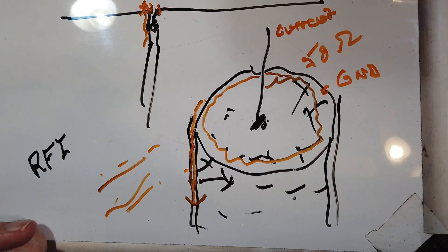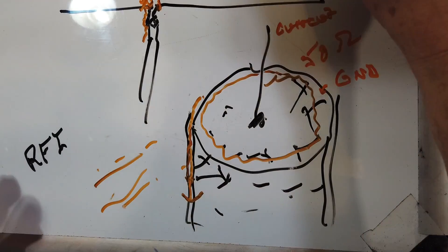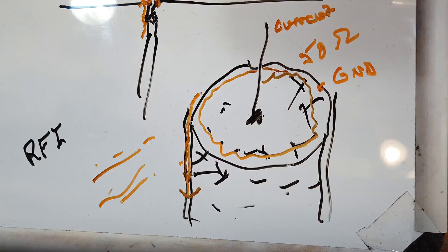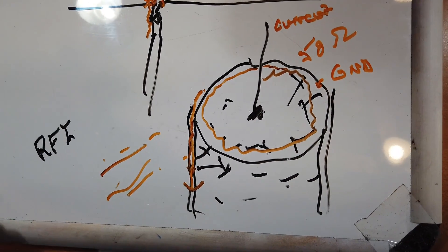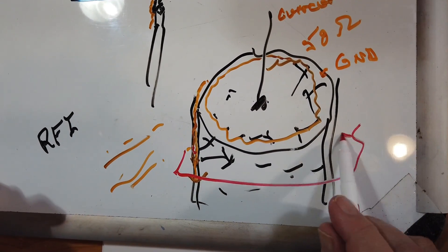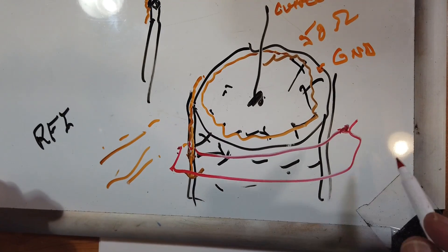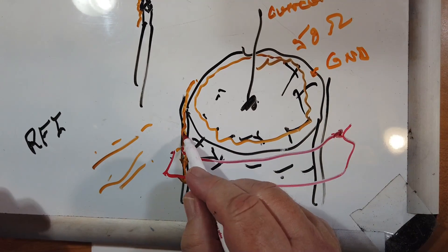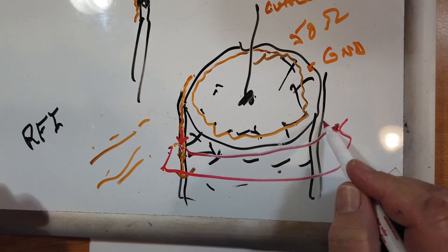So the question is, how do we keep this voltage from flowing down the outside?